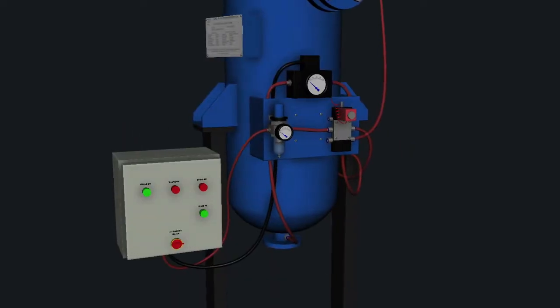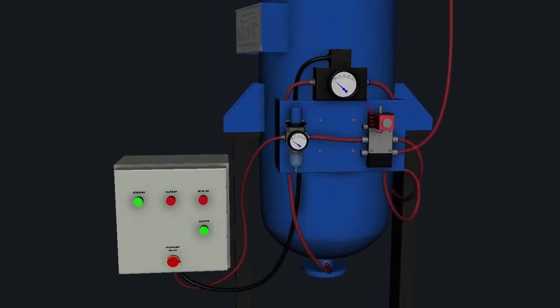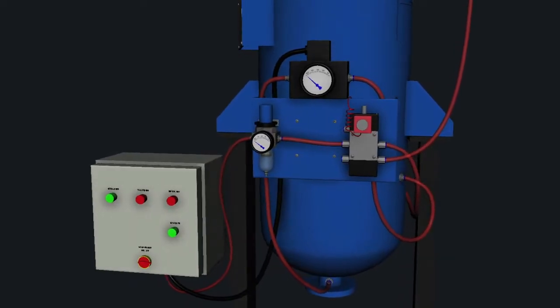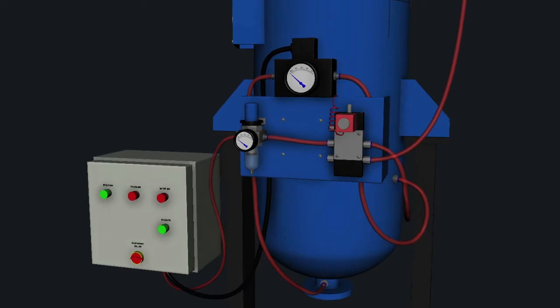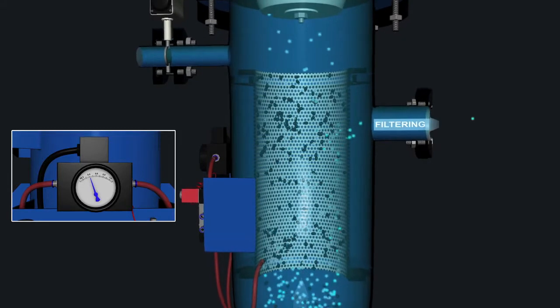ASC filters are equipped with a timer circuit and a differential pressure switch. The filter continues its operation until a preset timer value is reached or differential pressure value is reached. The filter enters into cleaning mode on trigger by either of these two inputs.